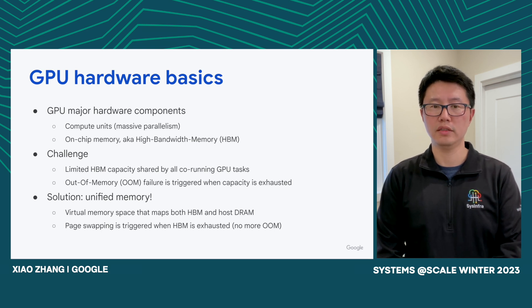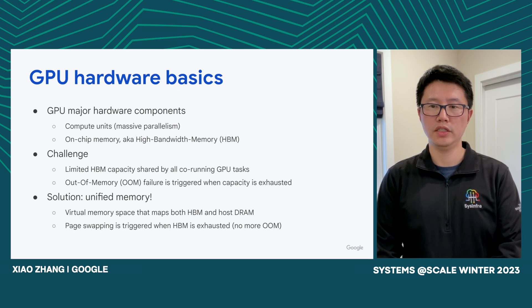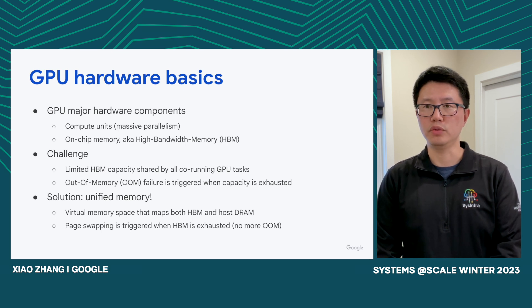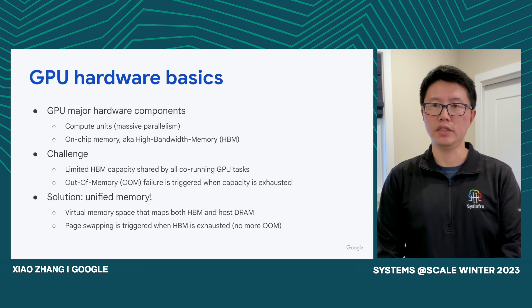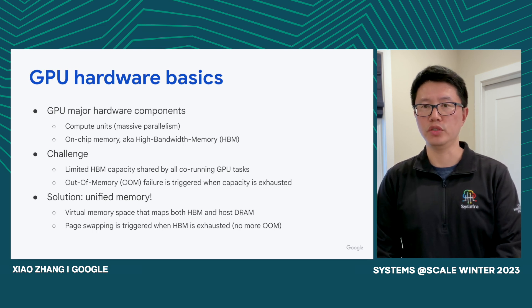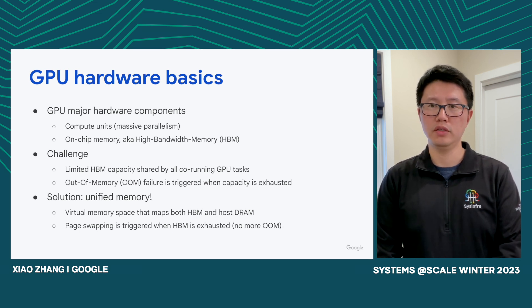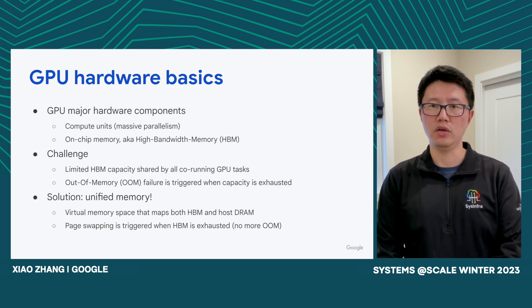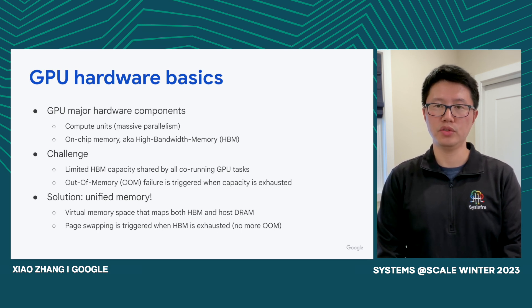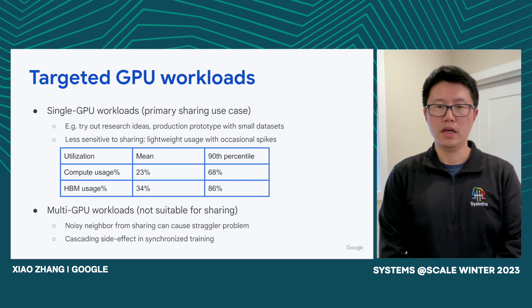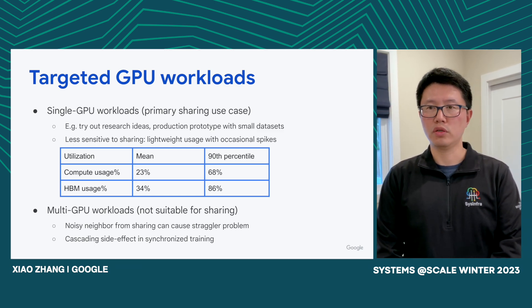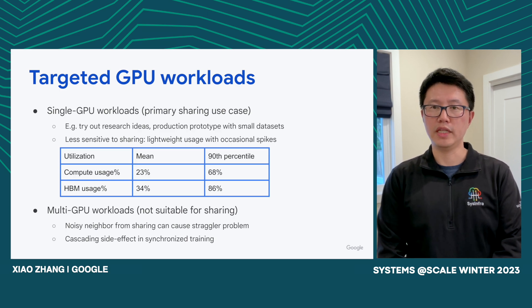Luckily, there's a solution called unified memory. Essentially, it creates a virtual memory space that maps both the HBM and the host DRAM. So when the HBM is exhausted, pages will be swapped from HBM to host DRAM. Because the host DRAM is typically 10x or even larger than the HBM, you will virtually not see out-of-memory errors anymore, but you pay the overhead of slowdown due to memory swapping between the two. For GPU sharing, it does not work for all workloads, but we have a class of workloads that can benefit from it.